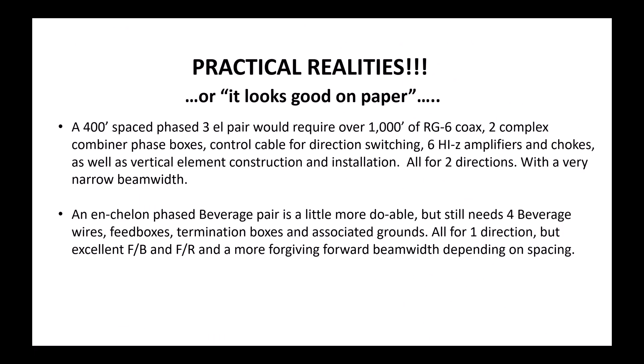Okay, what about practical realities though? In other words, hey look, this looks good on paper, specifically talking about this three element pair. Well, okay, for a 400 foot spaced pair, we're going to need over a thousand feet of RG6. We've got 400 foot spacing between the two, then each array, each three element array, has 70 foot delay lines or feed lines to each element, and then also delay lines associated with that too. We have two complex combiner boxes, we got control cables for direction switching, six high impedance amplifiers and chokes. We also have to build each vertical element and install it, and this is for all two directions. So we only end up with two directions in this case. And it's got a pretty narrow beam width, so a lot of effort, a lot of installation pain for really only two directions, though you can skew it a little bit by changing the broadside phasing.